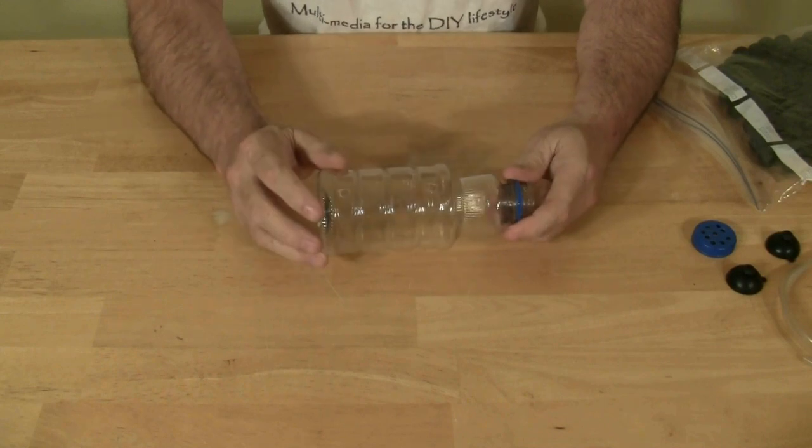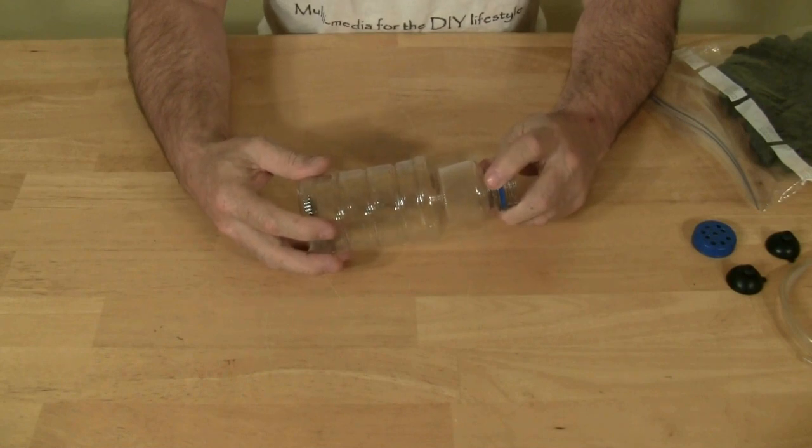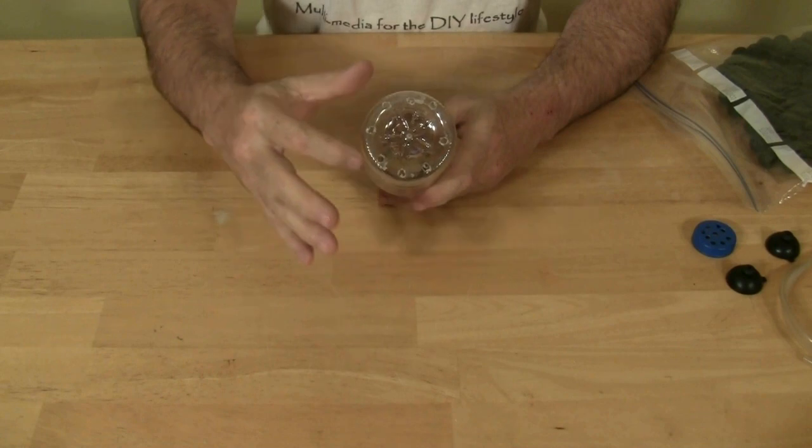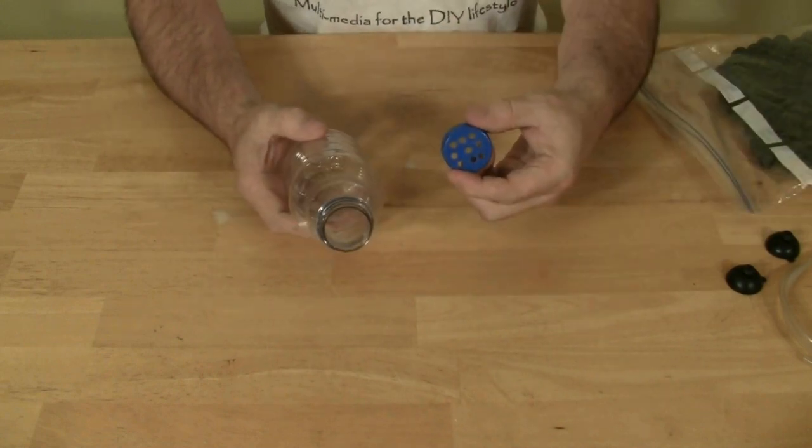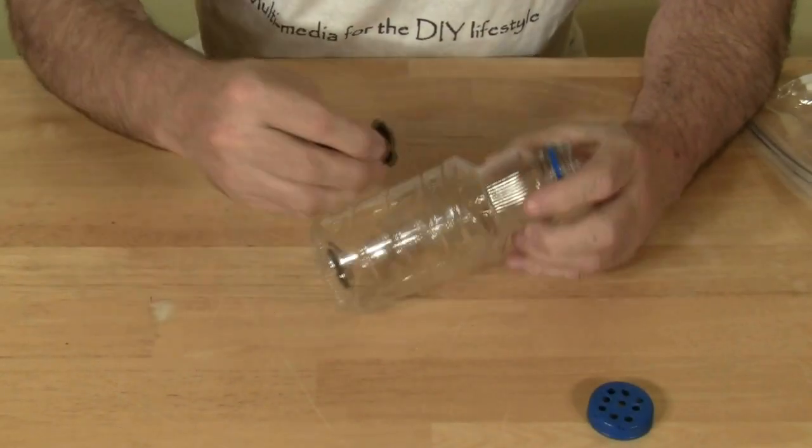Drill three holes in the sides. Two for the suction cup and one for the airline. Drill several holes in the bottom of the bottle, as well as several holes in the cap. Attach the suction cups to the side of the bottle.